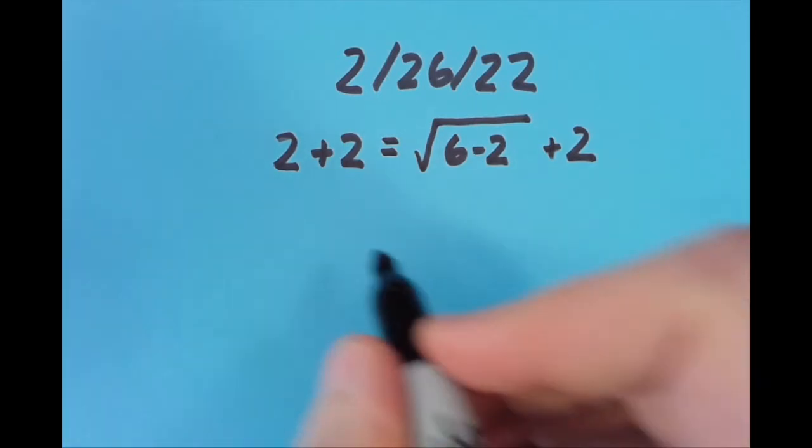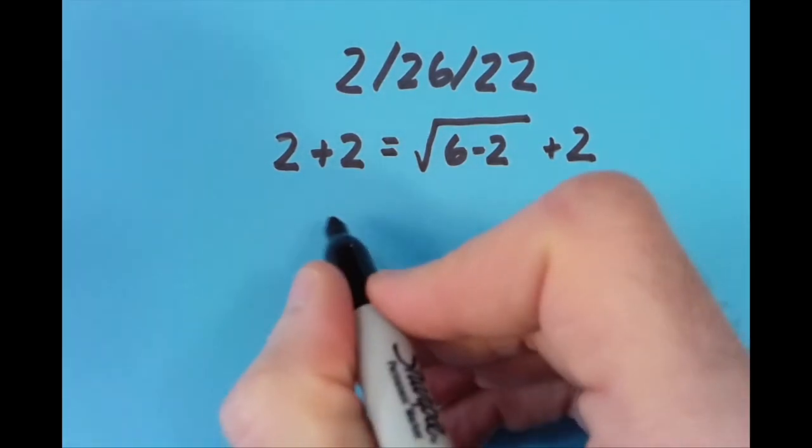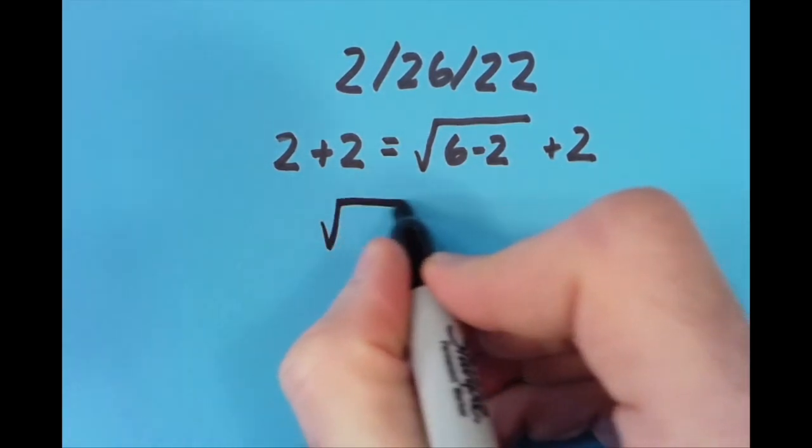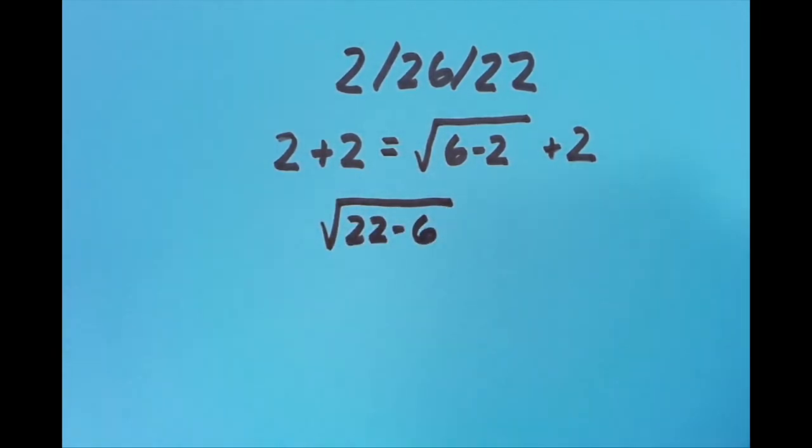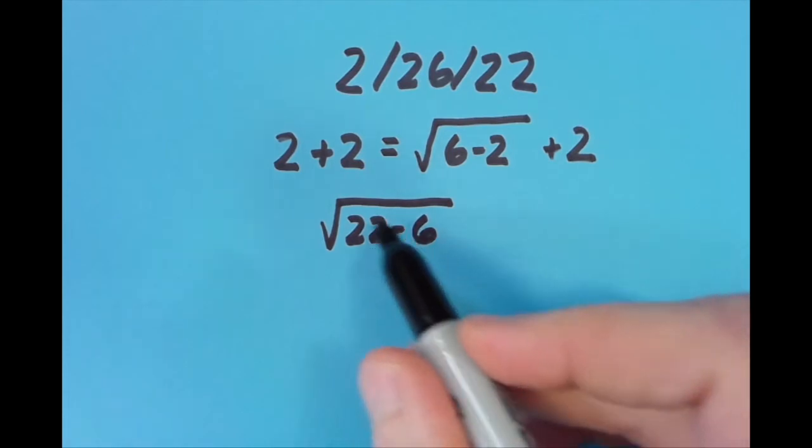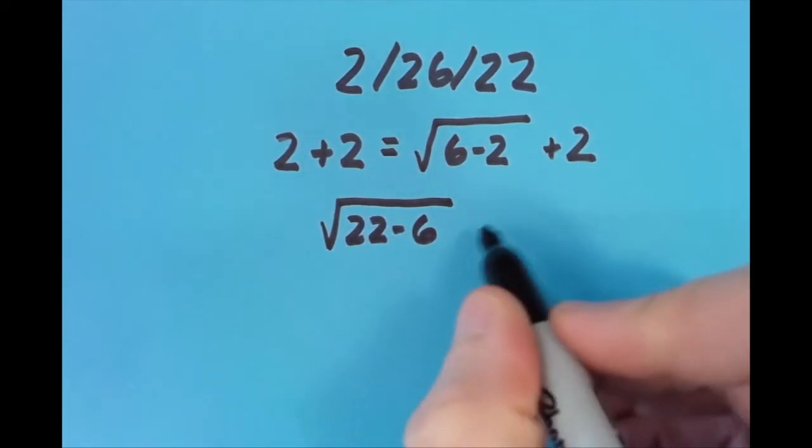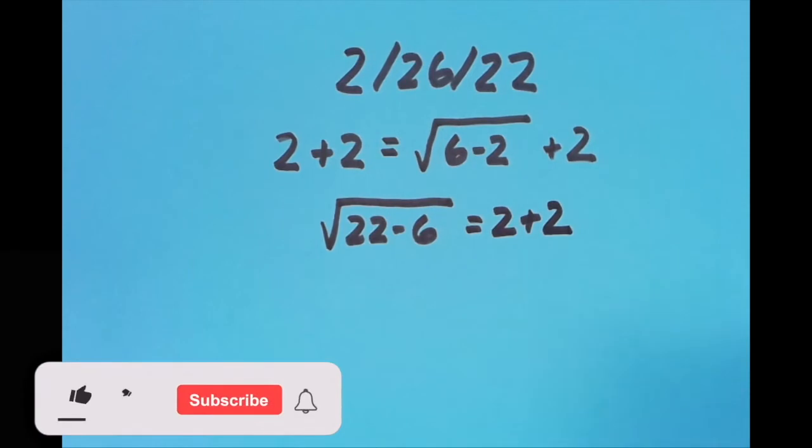What if I move the equal sign around a little bit? I said the square root of 22 minus 6—that's 16, the square root of 16 is 4—so that's equal to 2 plus 2.